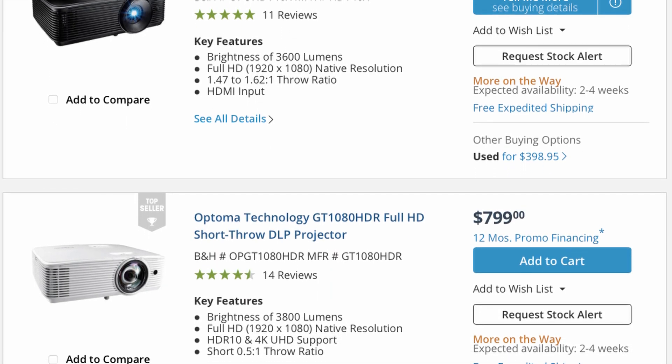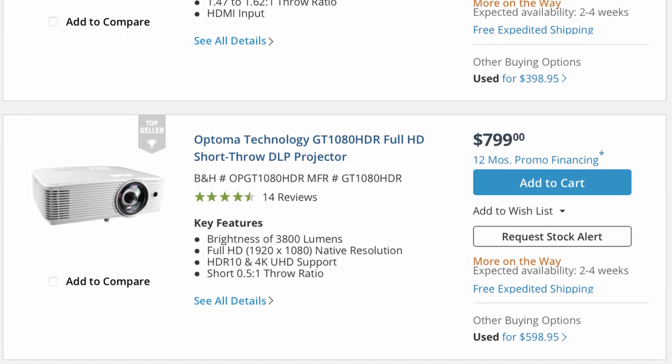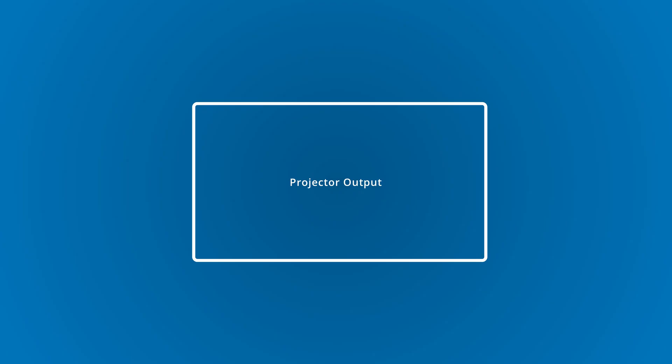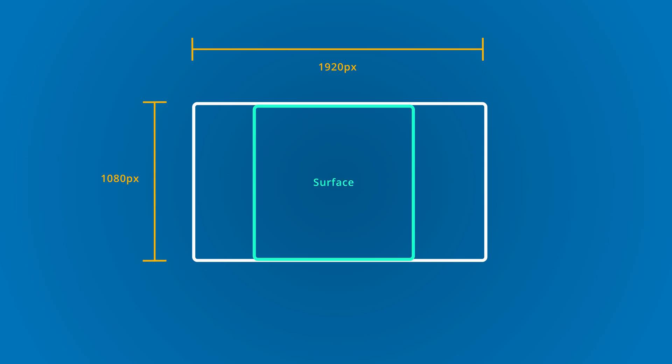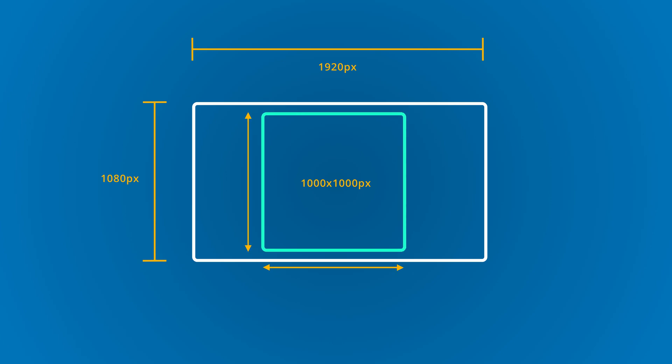By and large, most projectors output a resolution of 1920 by 1080, so it would not make much sense to create a surface with a higher resolution than the projector can output in the first place. If we were to draw out our projector's output, we can see that we can fit our square inside of it. If we were to overlay the dimensions, we would find that our surface resolution at maximum could be 1080 by 1080 pixels. However, in this case, I would most likely round down to a thousand by a thousand pixels, since we hardly ever line up the projector's output to the surface exactly in practice.